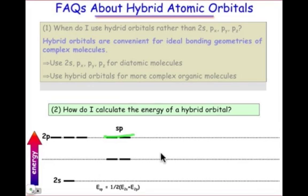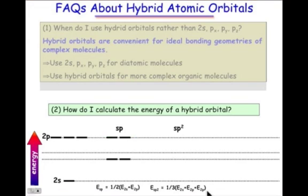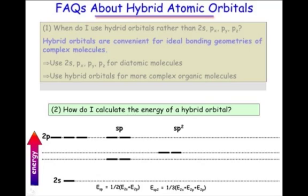There will be p orbitals not involved in hybridization, and their energy remains unchanged. For sp2 hybridization, the weighting scheme is one part s and two parts p, so the sp2 hybrid levels fall two-thirds of the way up from the 2s level. They're closer to the p level because they contain more p character. There's one level not involved in hybridization, and it remains unchanged.